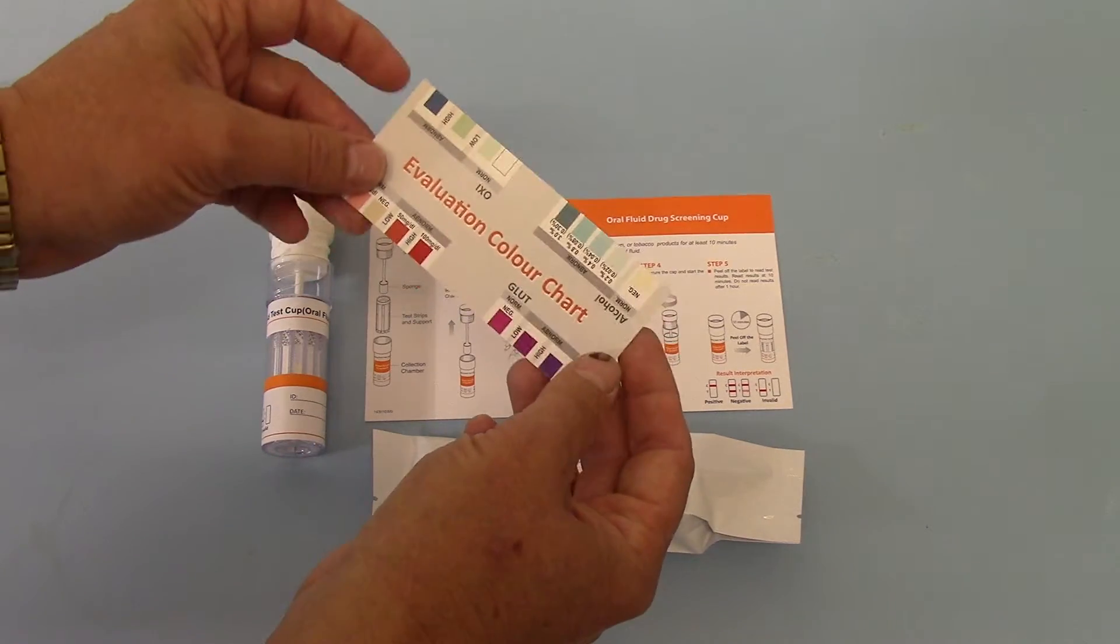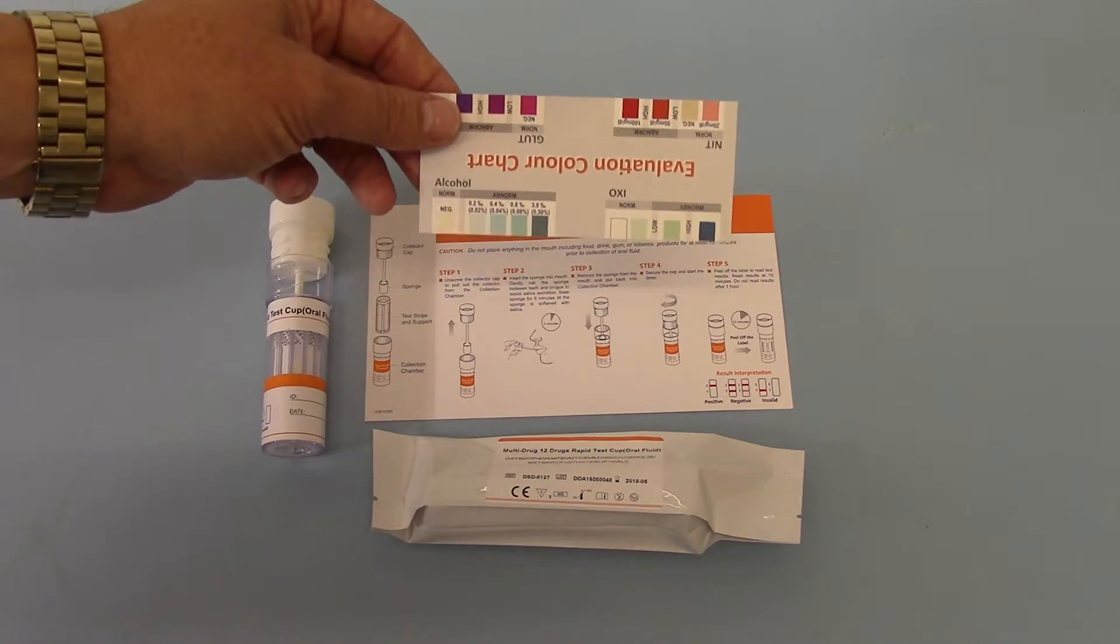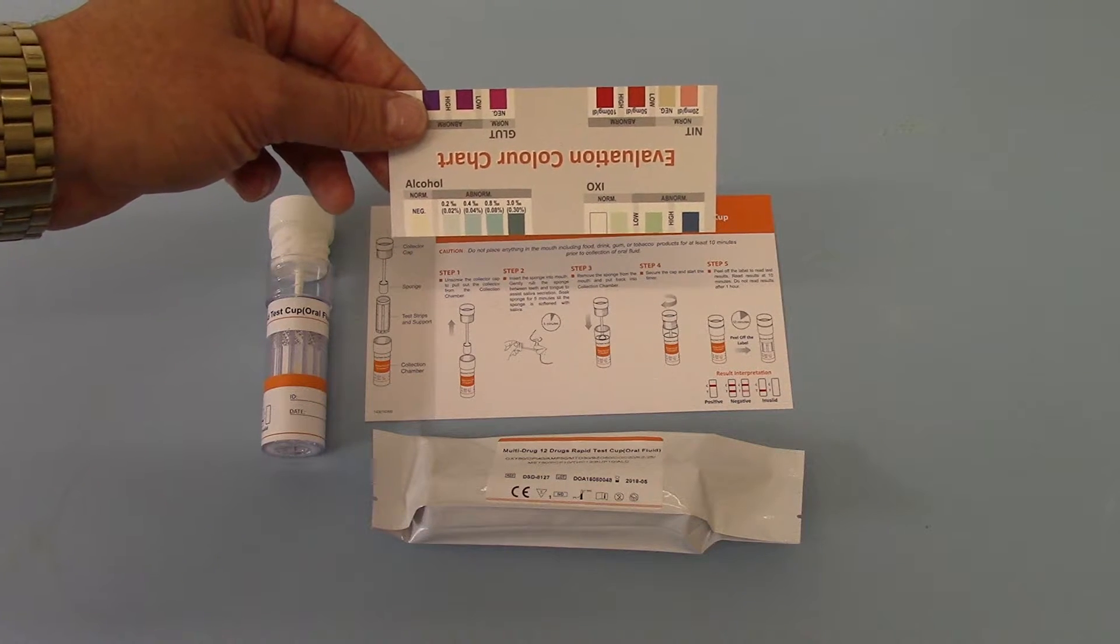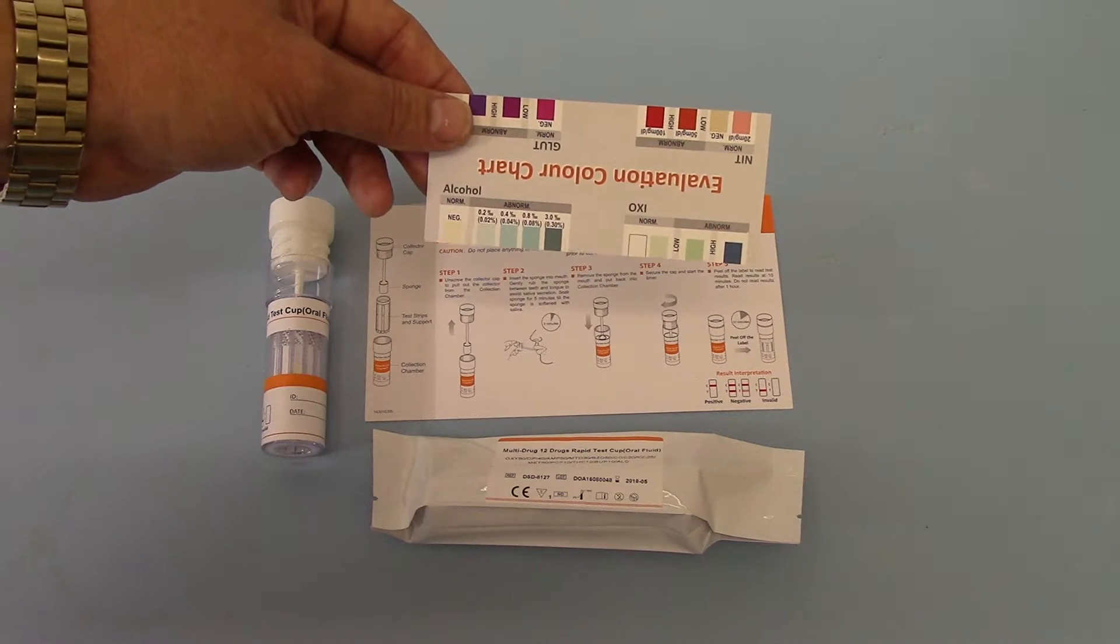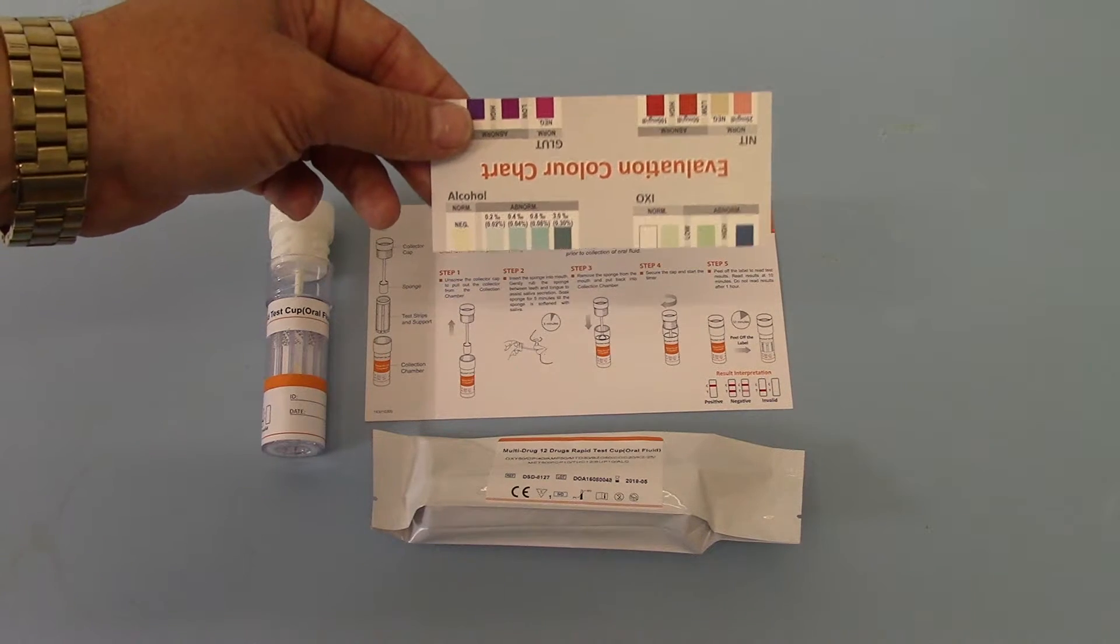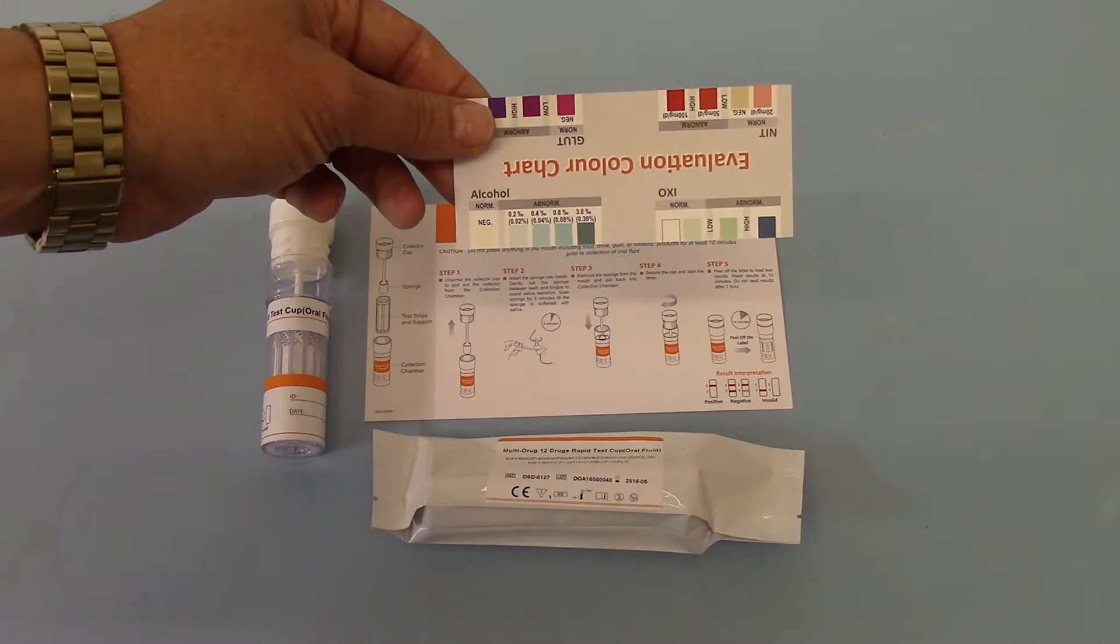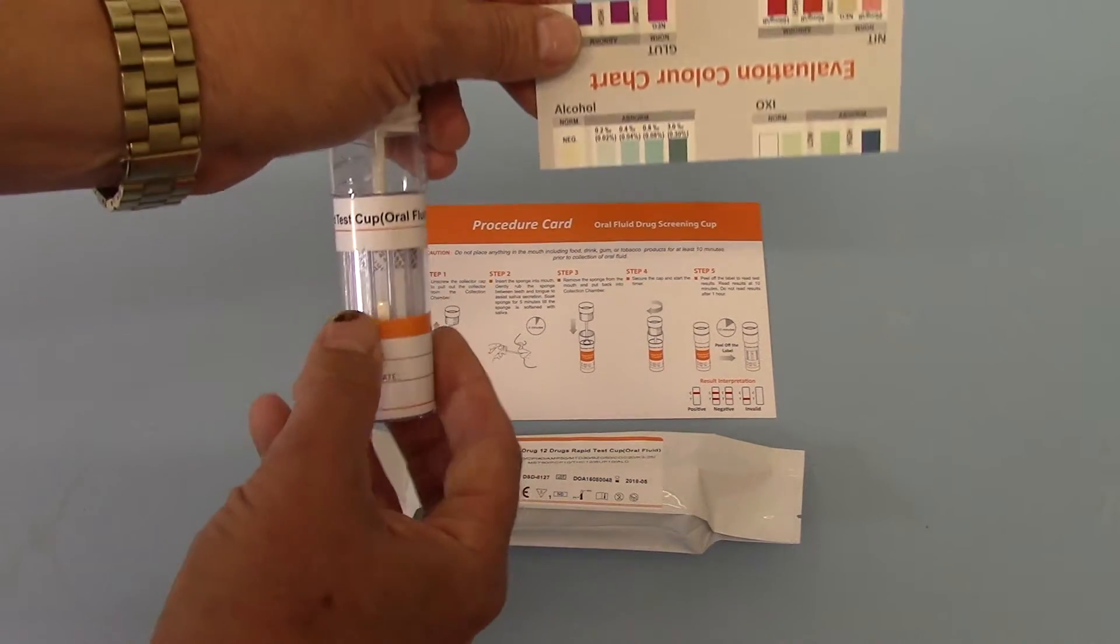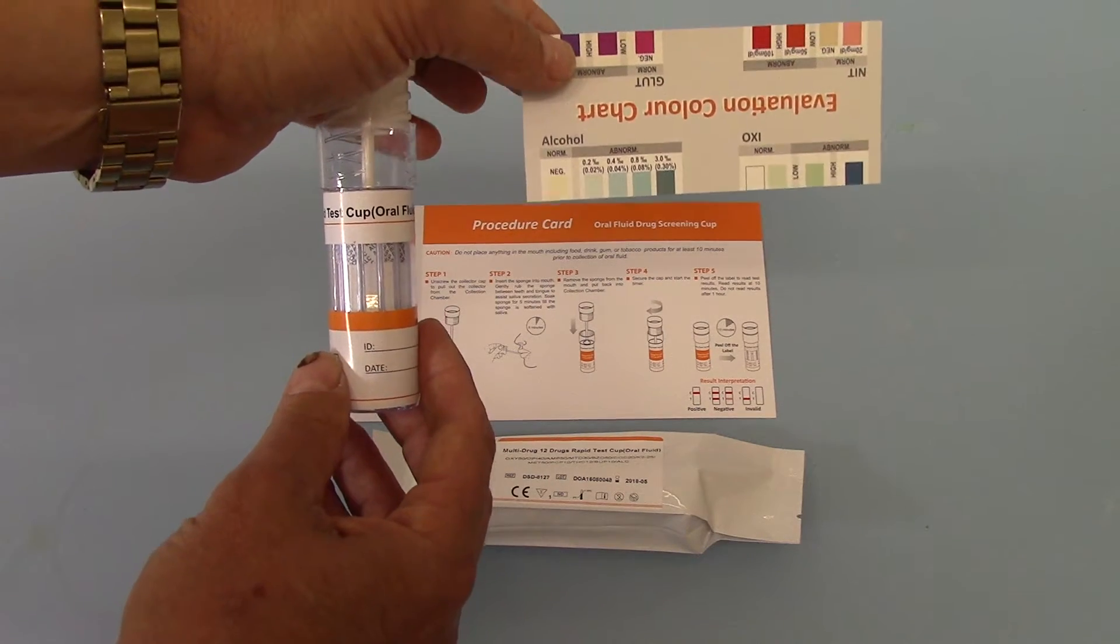So, the first thing to say about that in relation to this test is to ignore all those. The only relevant element of this evaluation card which you need to pay attention to when reading your results is the alcohol evaluation. This will show that the negative result is a simple non-colour-changing pad which will remain in the slightly cream-off white color that is shown if we show you the test before it's run. That is the negative result and it's the non-run color pad.